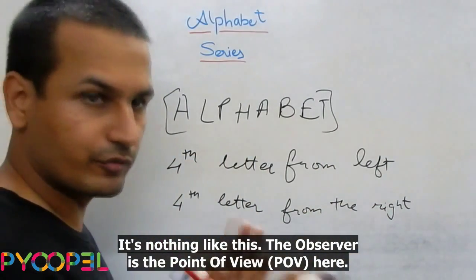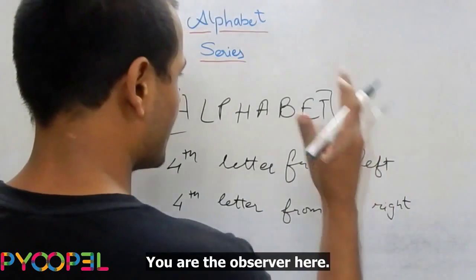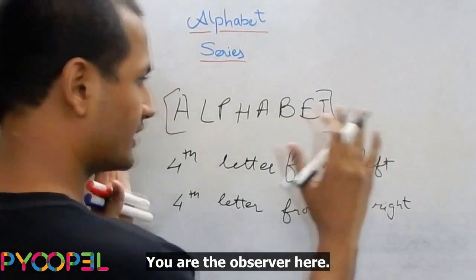The observer is the point of view here. So, your right is right, your left is left in the question.